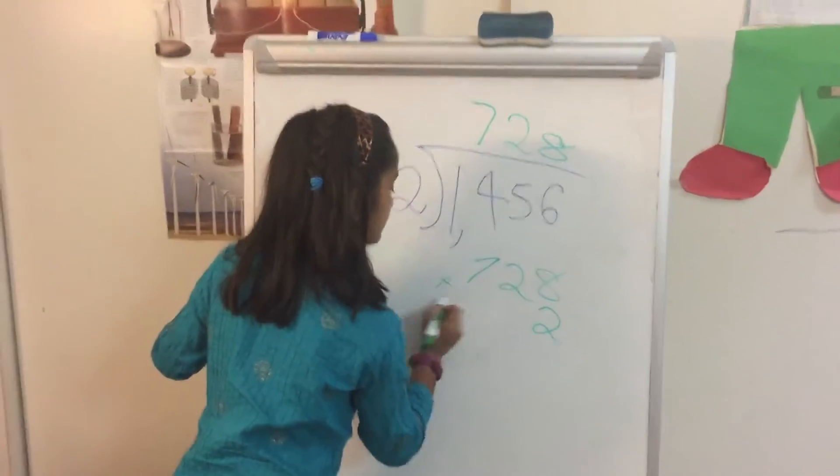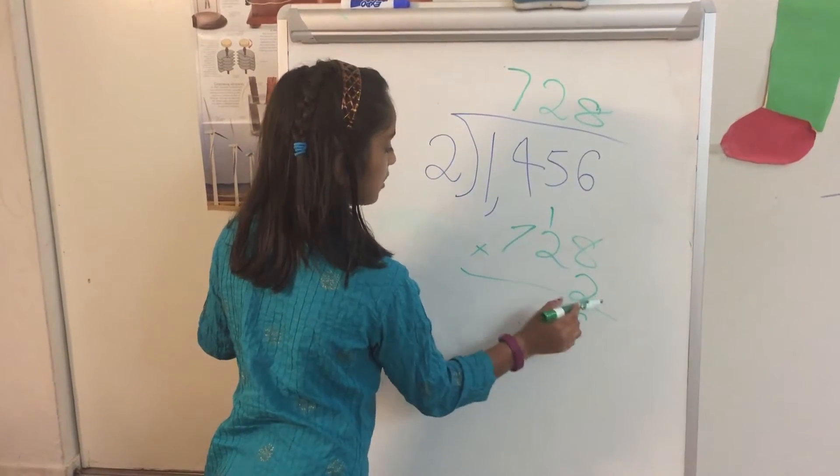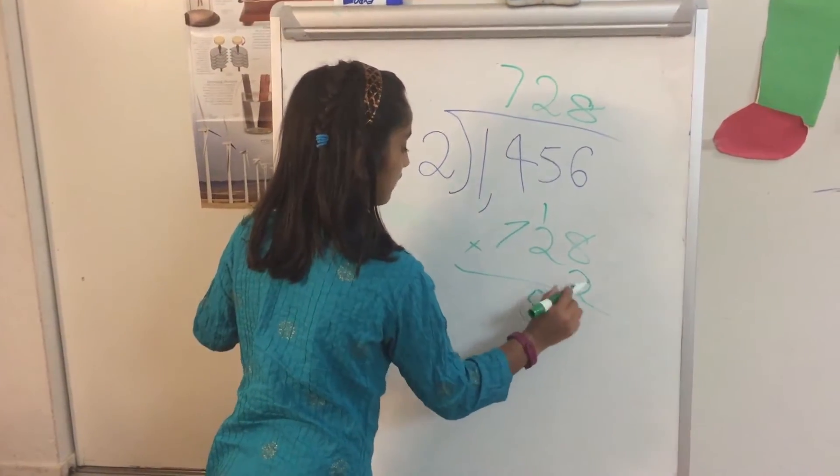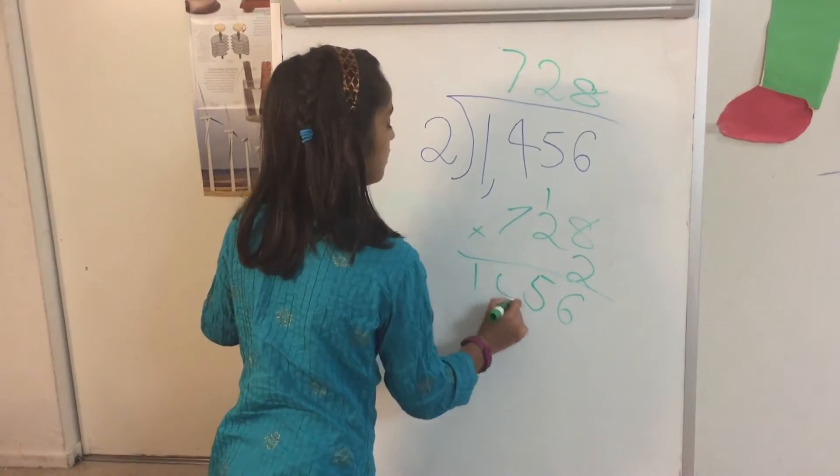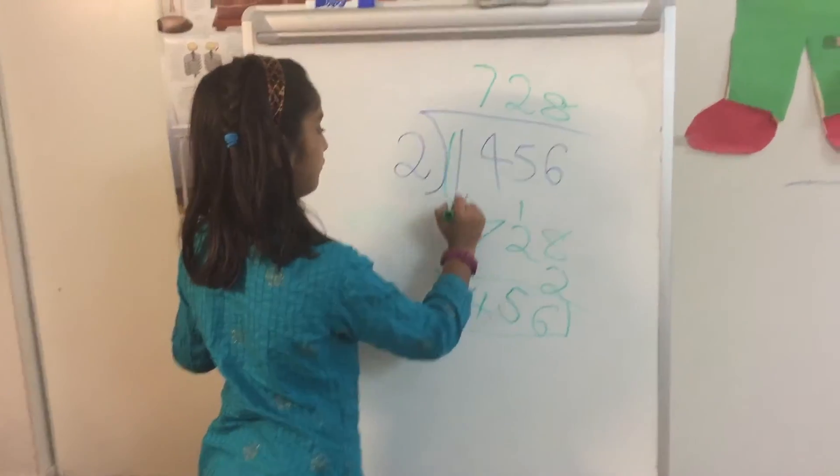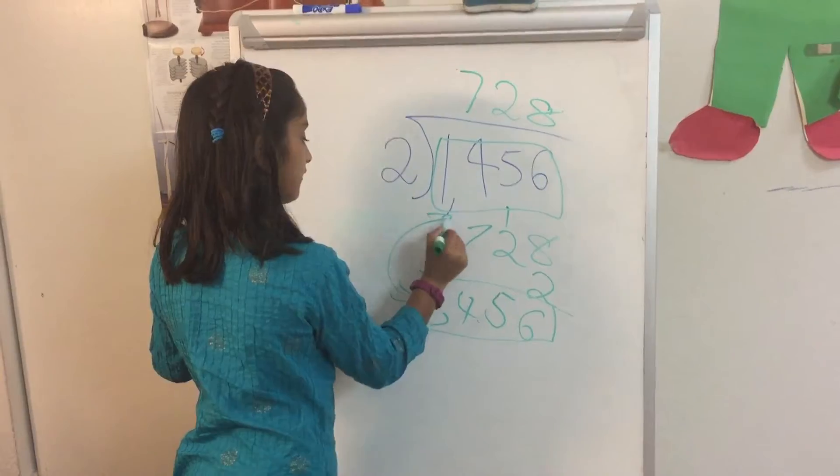So 728 times two is eight times two, 16. Two times two is four, plus your carryover, which is five. You write five down here. 7 times two is 14, and you get 1,456. Let's check. 1,456 and 1,456.